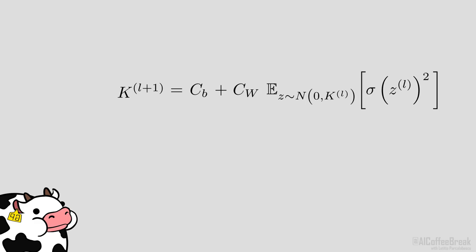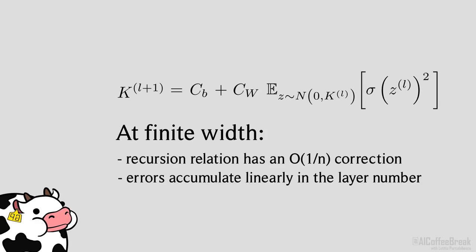In the finite width limit, the above calculation would still hold, but we would have an error term of order 1 over n. And when we apply this recursion relation multiple times, these error terms accumulate linearly and will therefore scale like L over n at layer L.